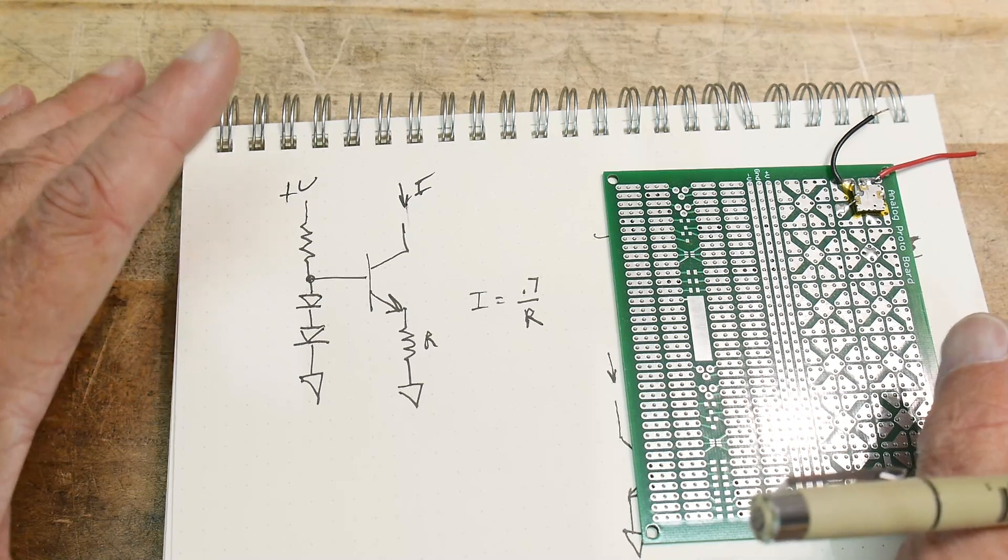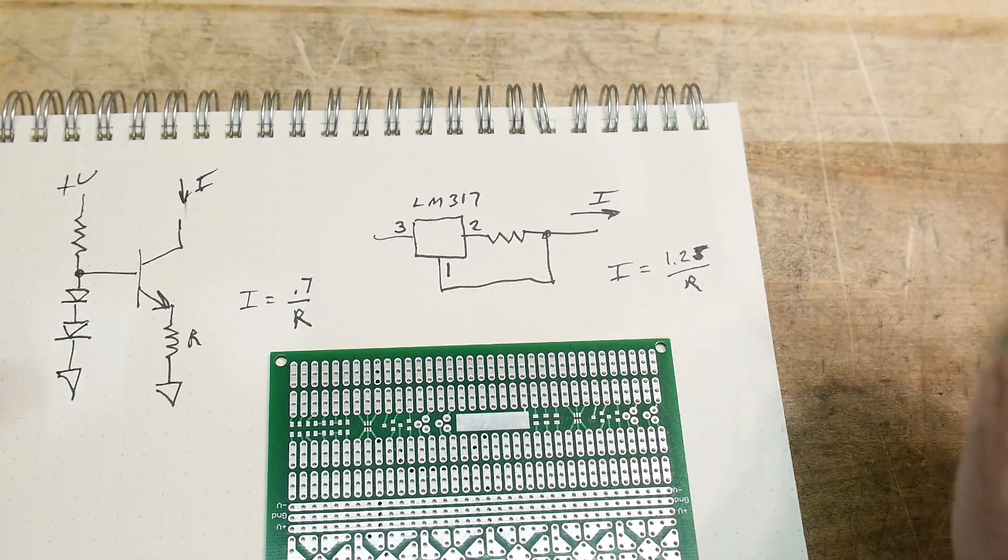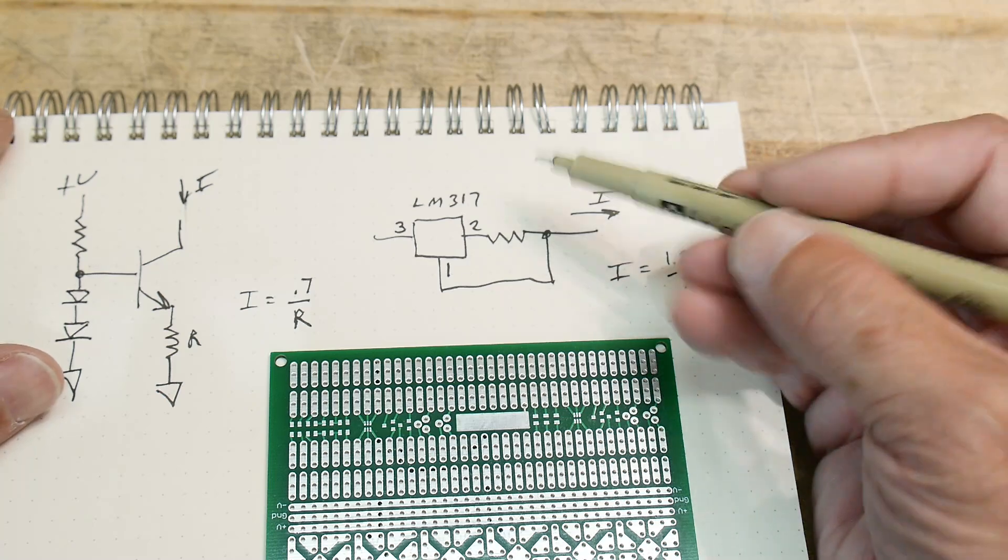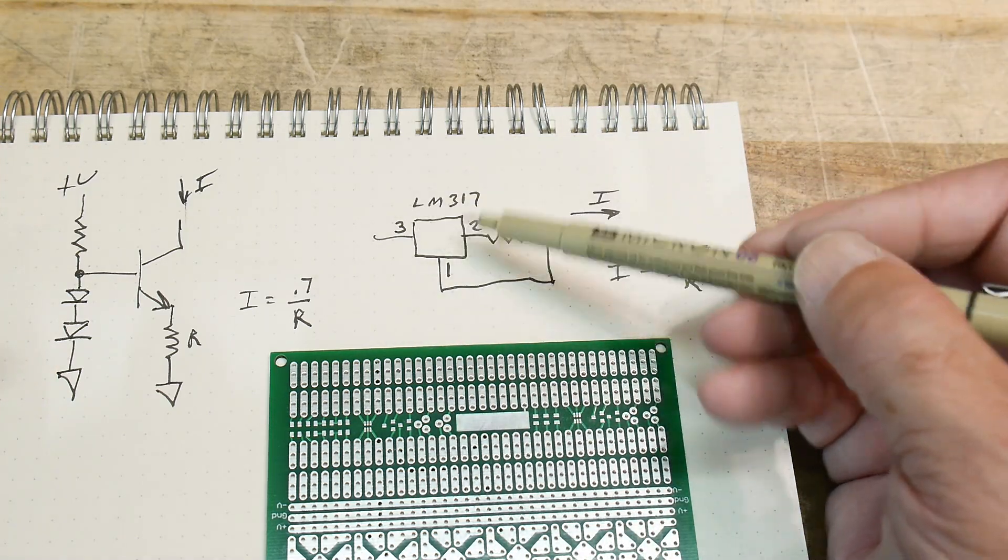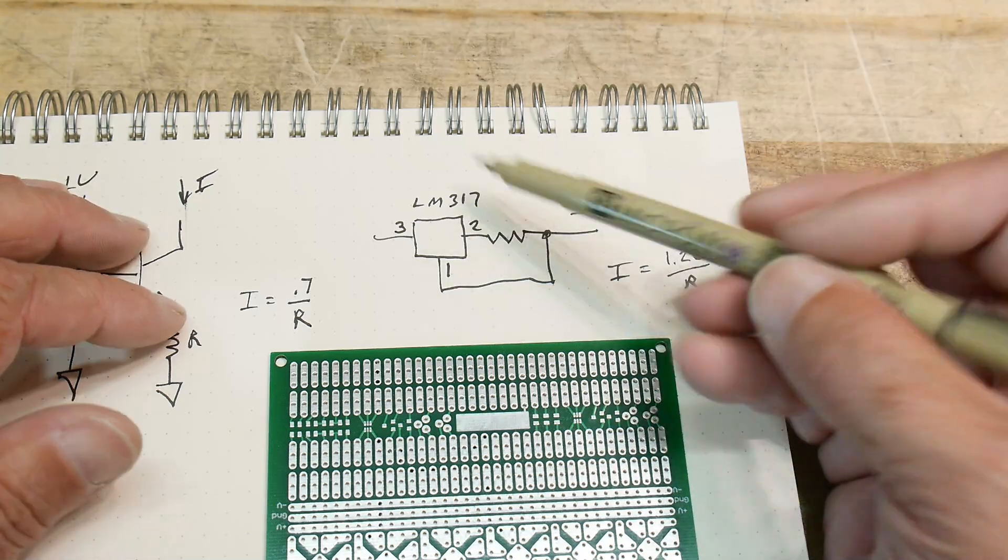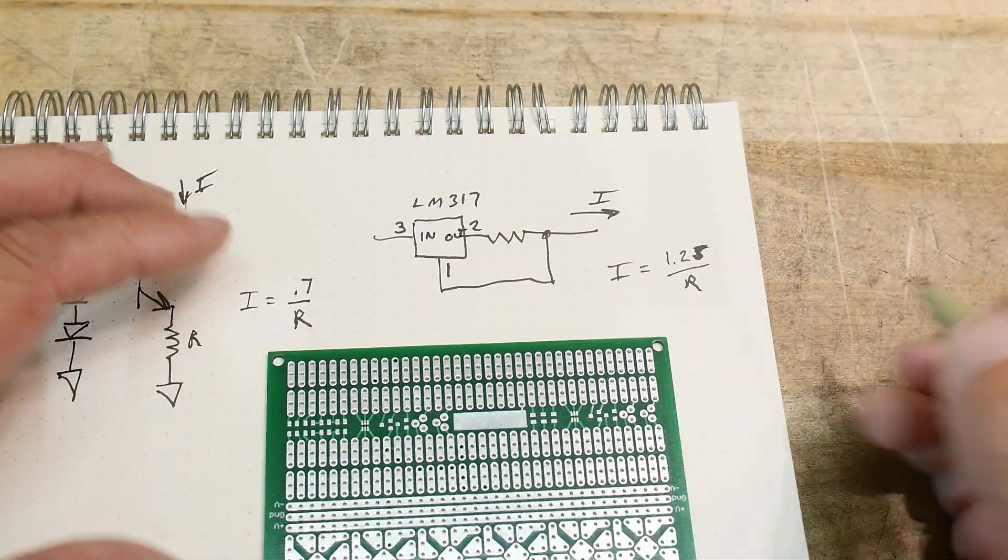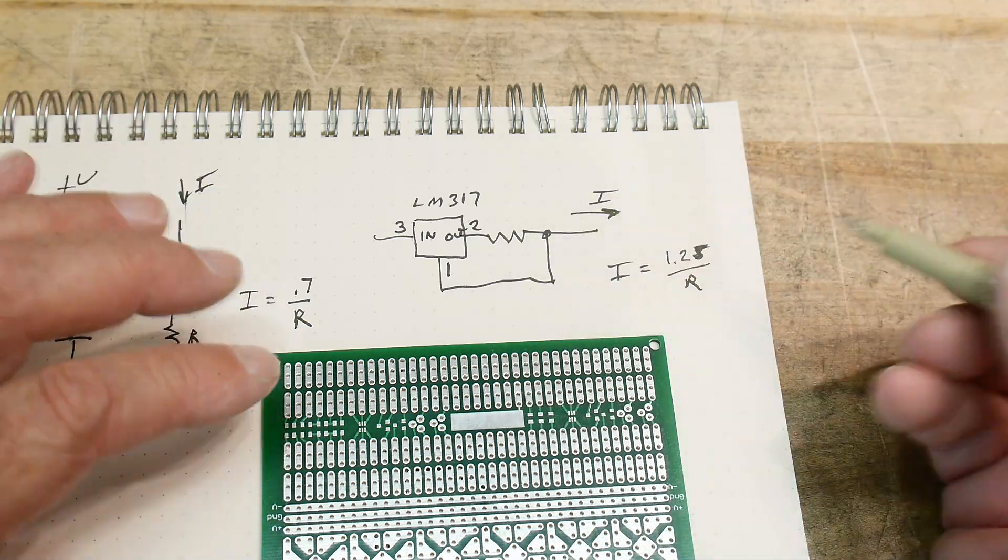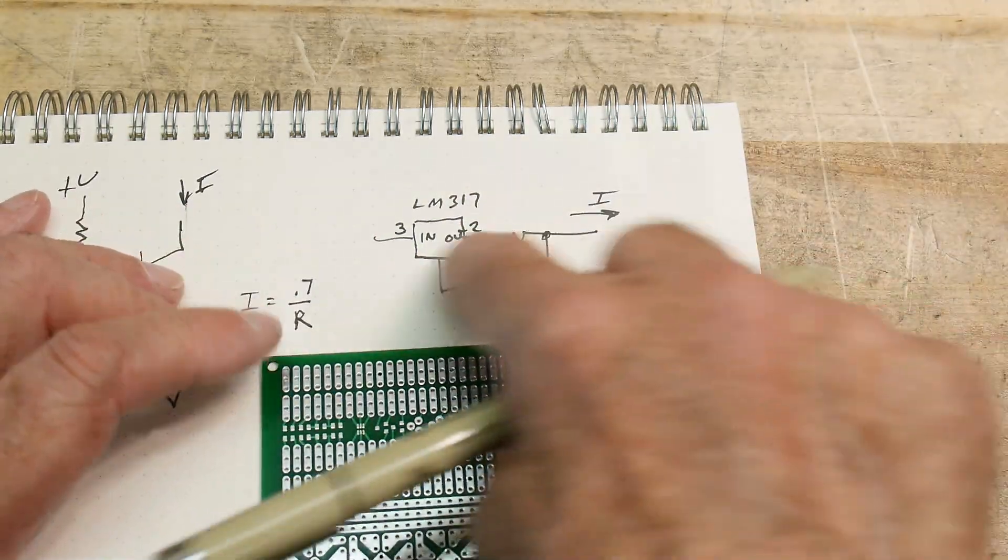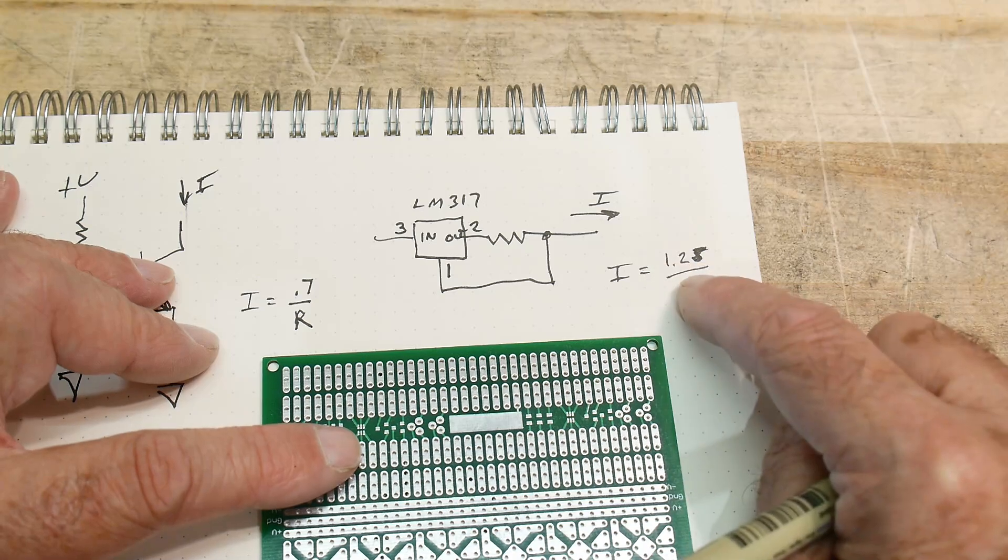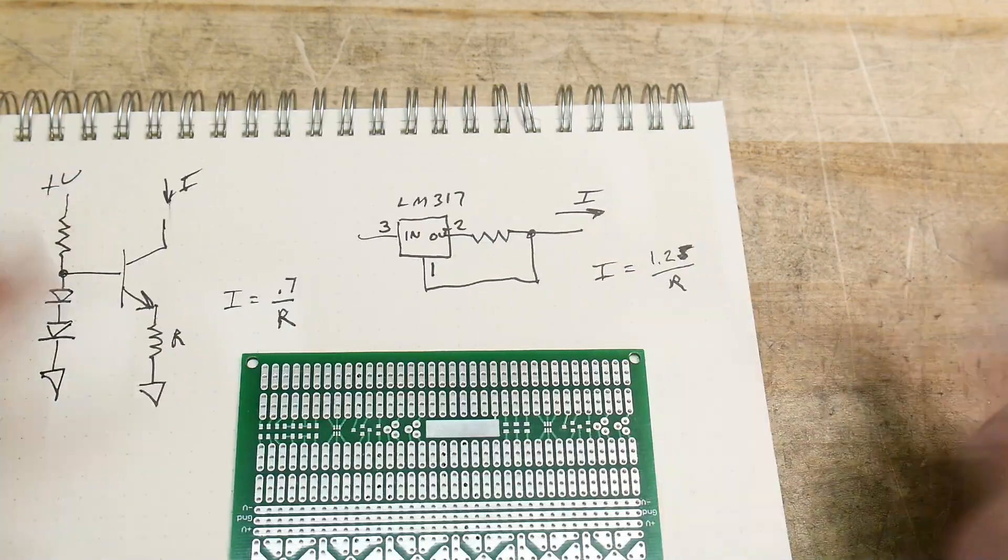So what about other current sources? I want to talk about one, which is this one. I've used tons of these in the past. You use a three terminal regulator, and here we're using an LM317, and we're using it in a funny way. If you go to the data sheets of these, you'll find this current source. This is the in, and this is the out, and then this is the adjust pin. And the LM317 wants to see about 1.25 volts across 1 to 2. That's the way it regulates itself. So we're going to have about 1.25 volts across this resistor, and if you have an R in there, that's going to limit the current to 1.25 divided by R. So let's try that out.